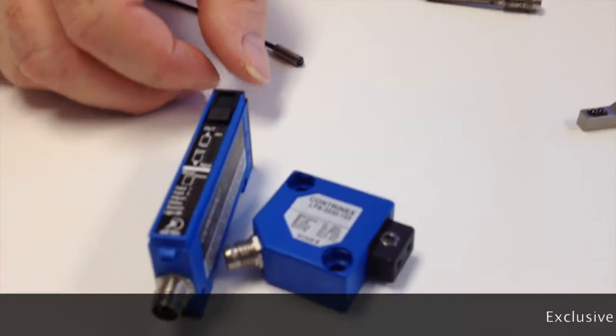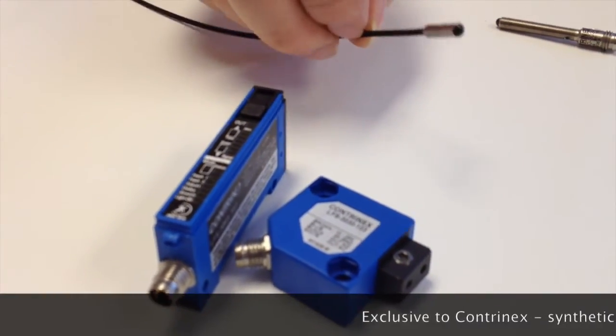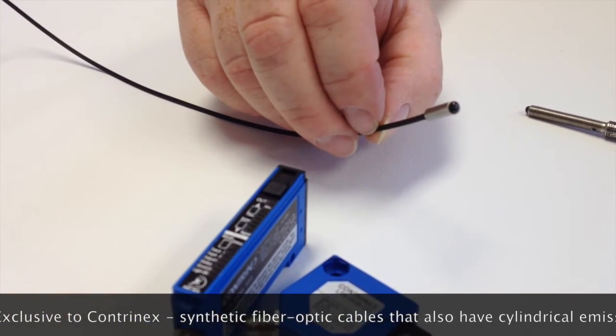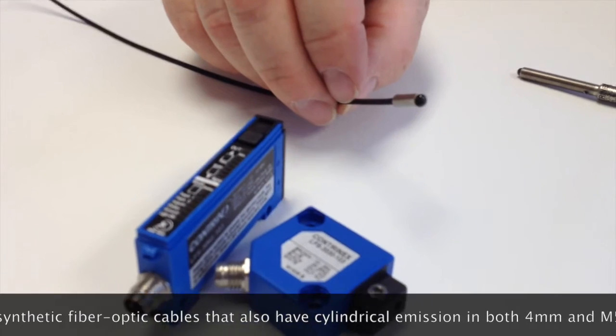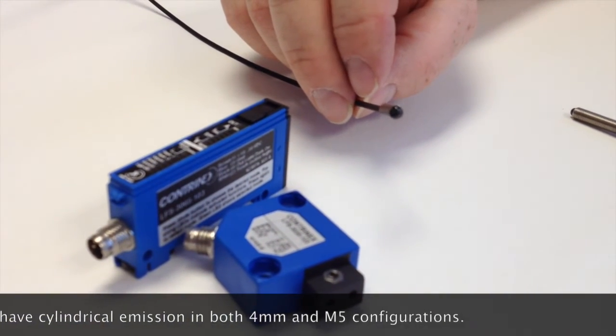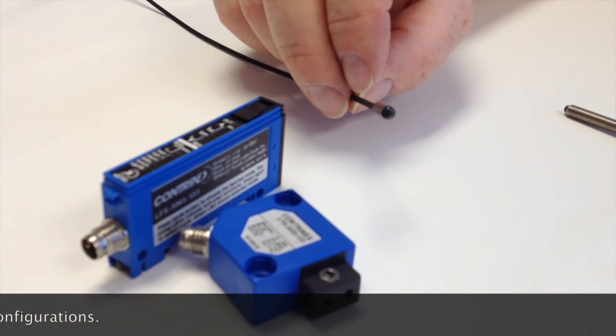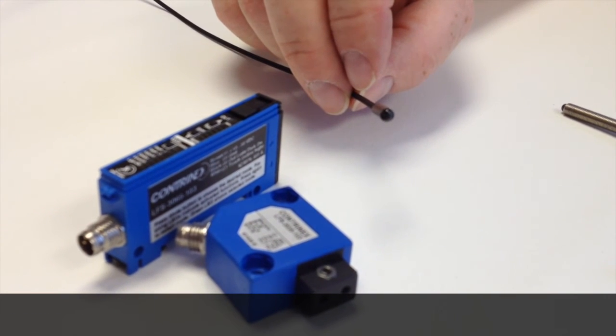With six choices of fiber optic amplifiers, we carry this cylindrical light in either an O4 or an M5 that has the ability to go 140mm and utilize infrared light, visible red light, or visible blue light.